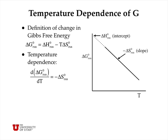So if we make a plot, just schematically, of delta G for a chemical reaction as a function of temperature, this will be a straight line with an intercept of delta H and a slope of minus delta S. The slope could be positive or negative, and the intercept could be positive or negative, but to a good approximation it's a linear function.